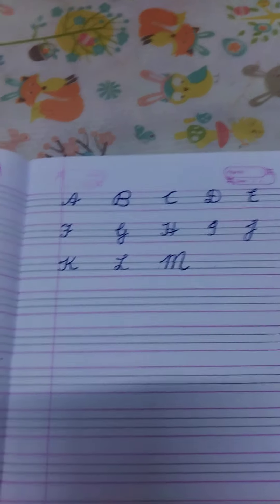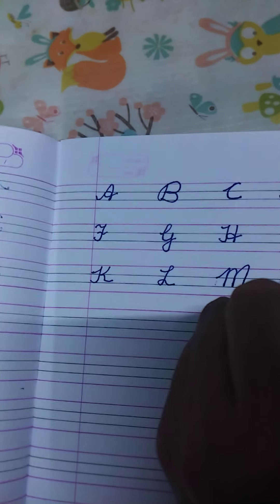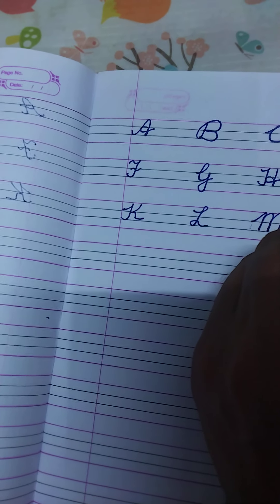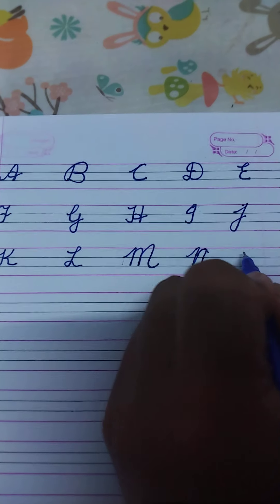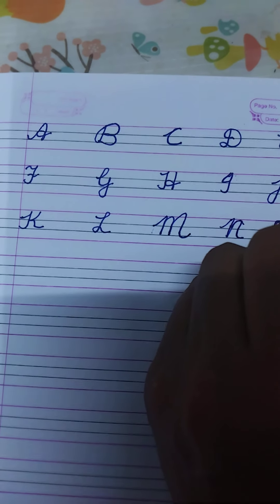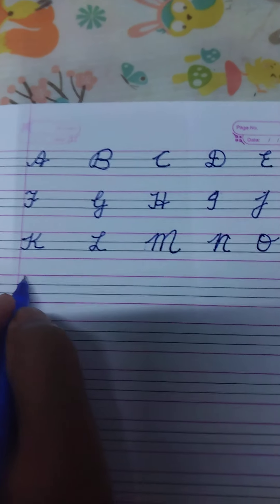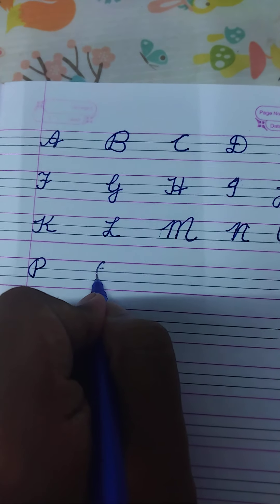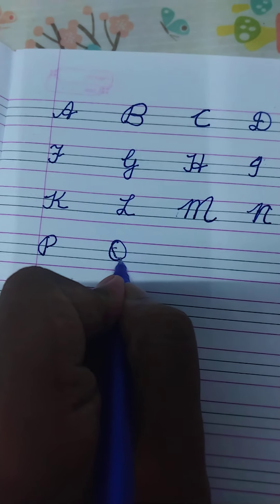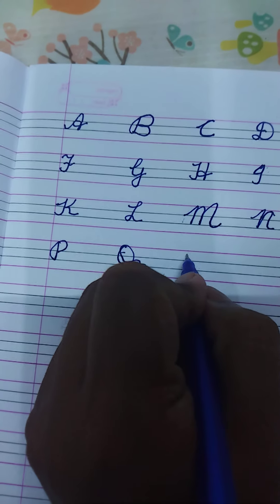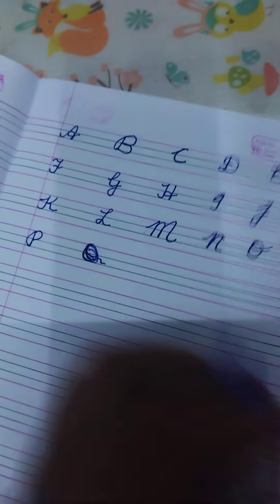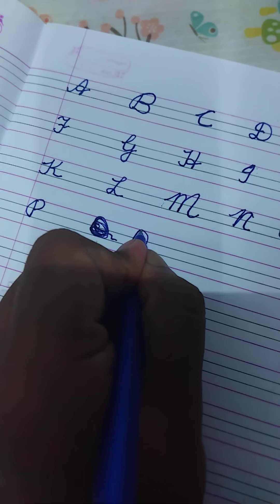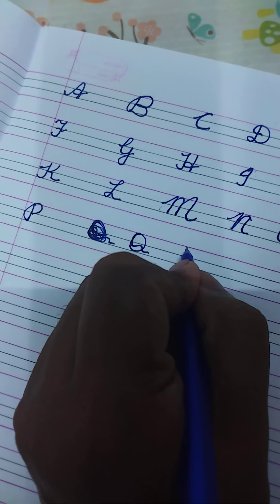Can you see my handwriting? Okay. In cursive it should be written like this. O should be like this. P, not B. Q will start from like this. Sorry, let me cancel this one. Q, R.